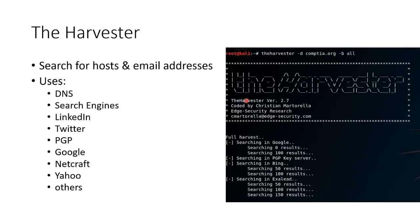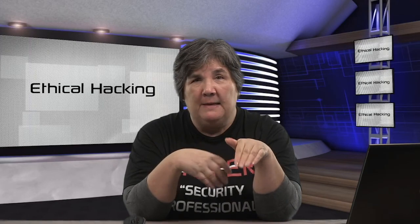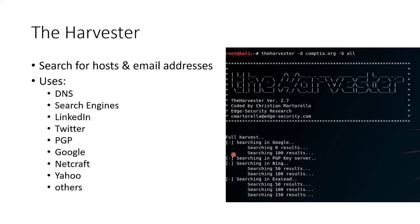There's another cool one called theHarvester. TheHarvester will search for hostnames, IP addresses, and email addresses. It searches DNS, search engines, LinkedIn, Twitter, PGP, Google, NetCraft, Yahoo, and others. It produces a whole list of email addresses, hostnames, domains, subdomains, and IP addresses. Really cool. So that is footprinting using social networking.